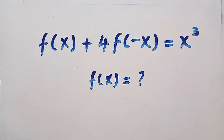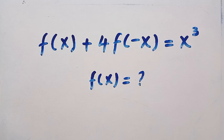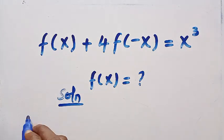Good day viewers, welcome. How to solve this functional equation: f(x) + 4·f(-x) = x³, and what is f(x)? I will solve this in two different ways, applying the general polynomial form and some basic algebraic methods. Before that, if you know how to solve this, drop it in the comment box. I will consider the solution for the first method.